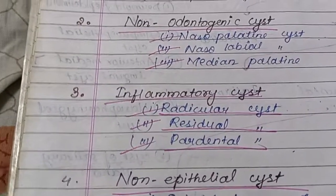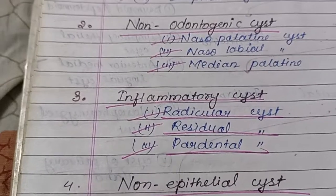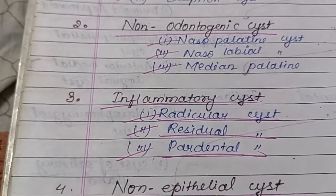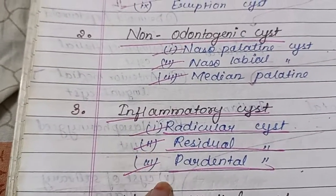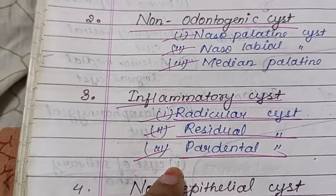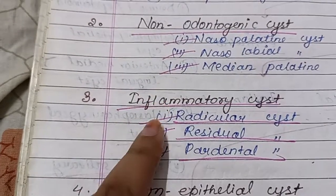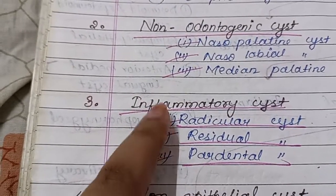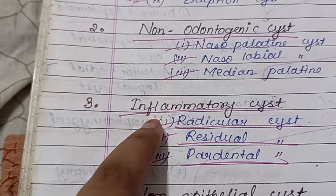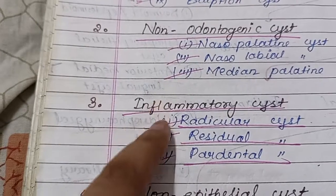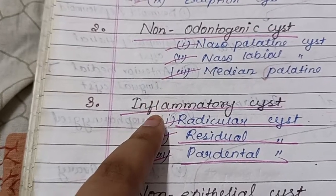Inflammatory cysts are further divided into radicular cysts, residual cysts, and paradental cysts. These are very important cysts from an exam point of view.